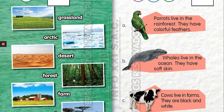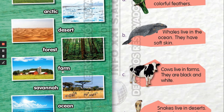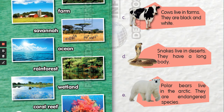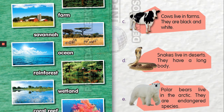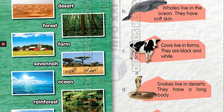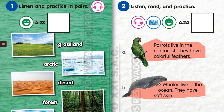Forest — que significa bosque, también selva a veces. Forest. Next: farm — granja. And finally, we reach ten new habitats. Hemos aprendido diez nuevos hábitats.